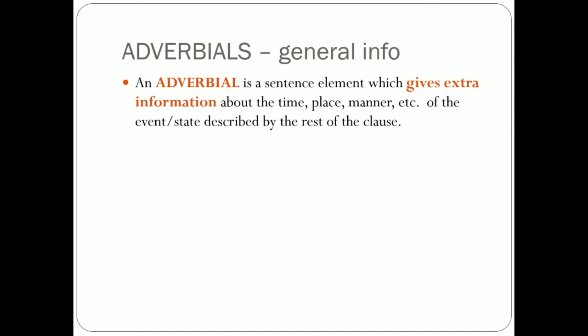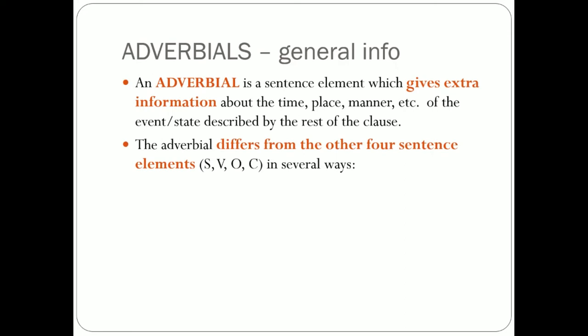What are adverbials? An adverbial is a sentence element which gives extra or additional information about time, place, and manner described by the rest of the clause. It is fundamentally different from the other four sentence elements — subjects, verbs, objects, and complements — in several significant ways. First of all, they have a wider range of forms.